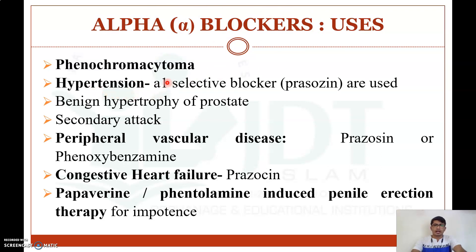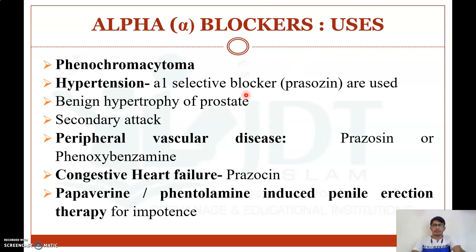For hypertension, alpha-1 selective blockers like prazosin can be used. They are also used for benign prostatic hypertrophy, secondary hypertension, and peripheral vascular diseases — where prazosin and phenoxybenzamine can be used. For congestive heart failure, prazosin can be used. Papaverine and phentolamine are used in intracavernosal injection therapy for impotence. These are the different uses of alpha-blocking anti-adrenergic agents.